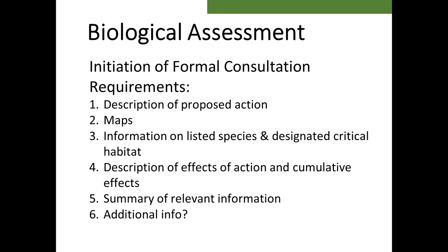3. Information about the listed species and their designated critical habitat, such as presence, abundance, density, or occurrence. 4. A description of the effects of the action and cumulative effects. 5. A summary of relevant information provided by the applicant if one exists. 6. Any other relevant information that can help identify likely effects of the action to listed species or their designated critical habitat.